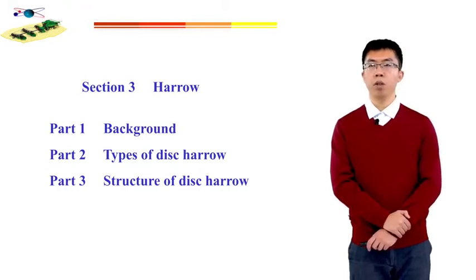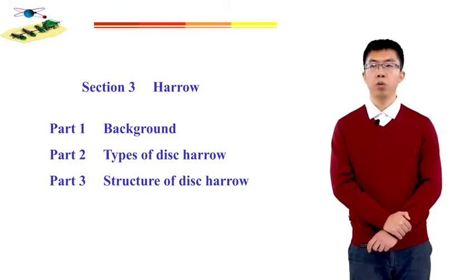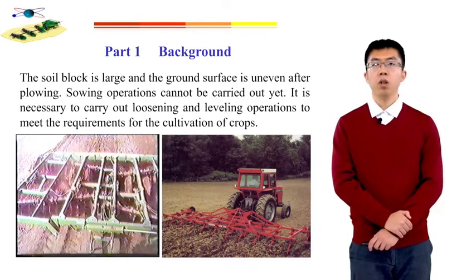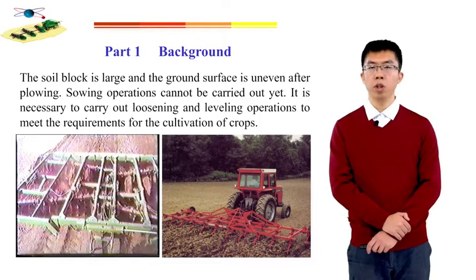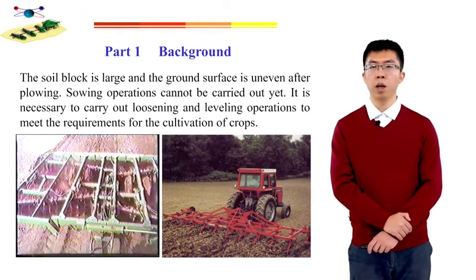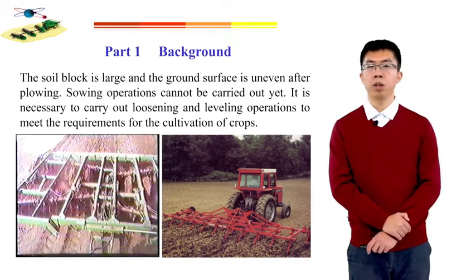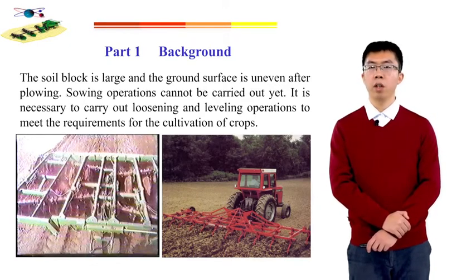For the harrow part, we will talk about three sections: the background, the types of disc harrow, and the structure of disc harrow. After plowing, there is a lot of space in the arable land — the soil blocks are large and the ground surface is uneven. Sowing operations cannot be carried out yet. It is necessary to carry out loosening and leveling operations to meet the requirements for crop cultivation. This work is generally done by the harrow.